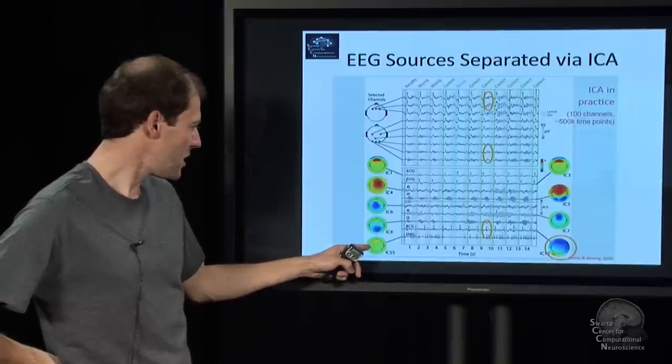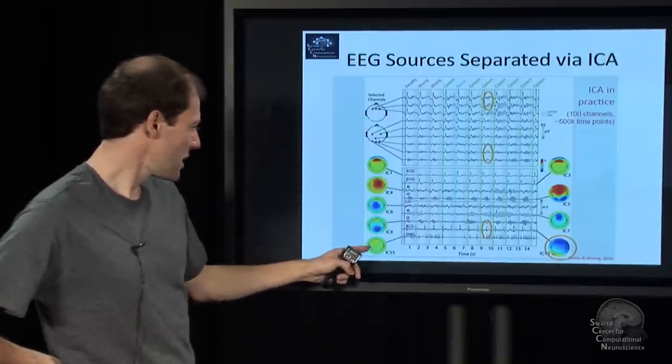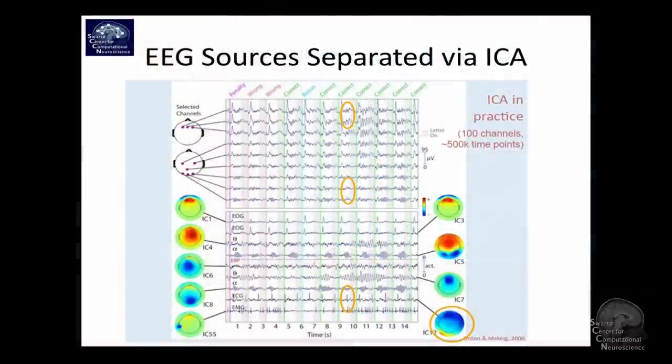And here's EMG, this muscle activity. You see where this comes from. It's a temporal or basically at the side source. It's a very, very focal projection, very small scale, and it's because the muscle is right under the skin. That's why it's so sharp.